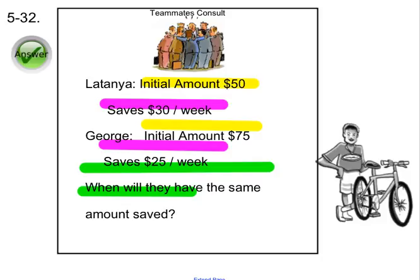When Latanya and George will have the same amount of money in their savings accounts. Be prepared to share your method with the class. So first of all, let's take a look at the information. Taking apart that paragraph, we know Latanya has $50 to start out with and she can save $30 a week. George had more money to start out with, $75, but he's only saving $25 a week.